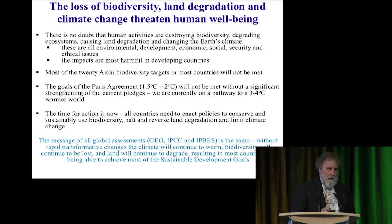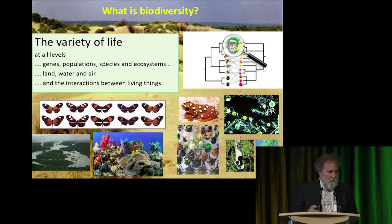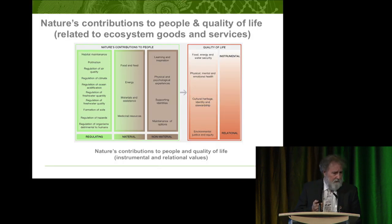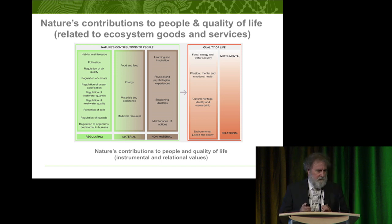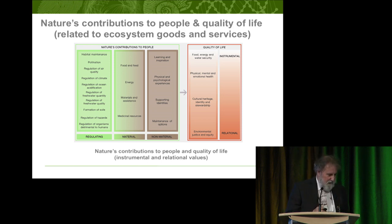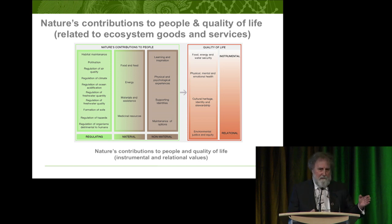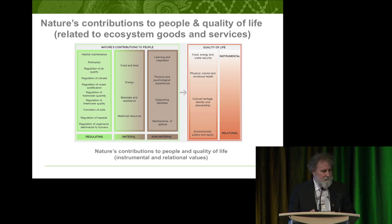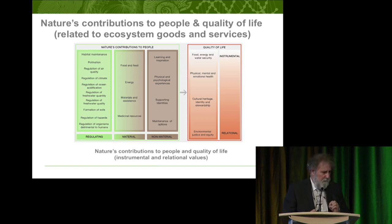What is biodiversity? It's at the genetic level, the species level, and the ecosystem level. Nature's contribution for people is another terminology for what most people call ecosystem goods and services. There are regulating, material, and non-material contributions — very similar to regulating ecosystem services, provisioning ecosystem services, and cultural ecosystem services. The regulating ones include climate and fresh water; material ones include food, fibre, energy, and medicines; and non-material ones include learning and inspiration and identity.